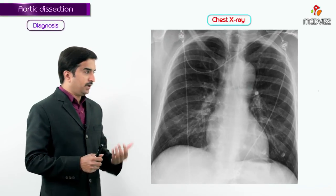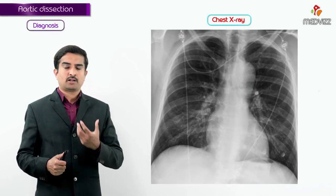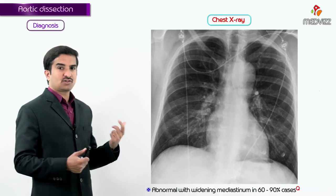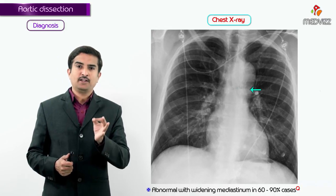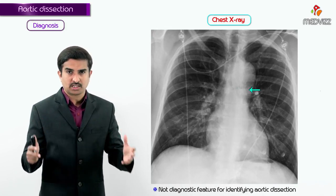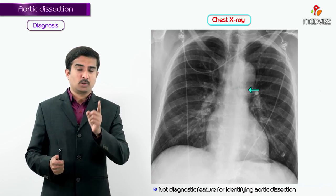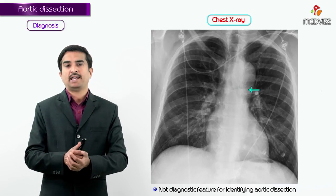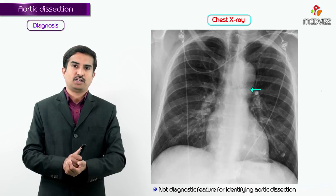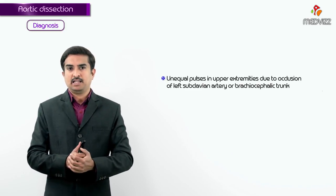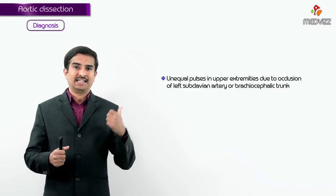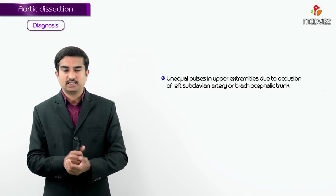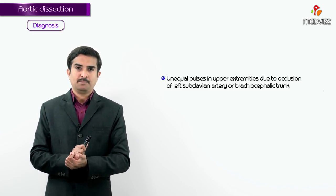On chest X-ray, in 60 to 90 percent of cases, the chest X-ray will be abnormal with widening of the mediastinum as the main feature. While widening of the mediastinum is not diagnostic for aortic dissection, it is the most important X-ray finding. Additionally, unequal pulses in the upper extremities may be observed, especially when there is involvement or occlusion of the left subclavian artery or brachiocephalic trunk.